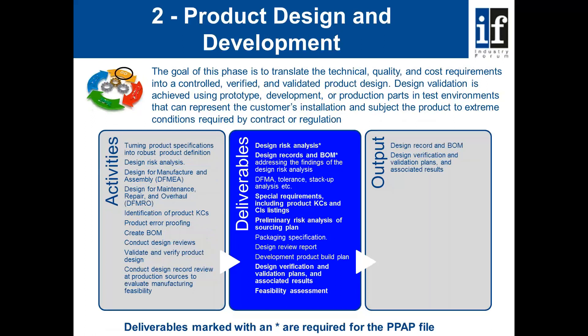When we move to product design and development, the goal of this phase is to translate the technical, quality and cost requirements into a controlled, verified and validated product design. Design validation is achieved using prototype development or production parts in test environments that can represent the customer's installation and subject the product to extreme conditions required by the contract or regulation. We can start seeing items from phase two being used in the PPAP file — for example, the design risk analysis, often defined as a DFMEA, and design records and bill of material. These are PPAP deliverables.